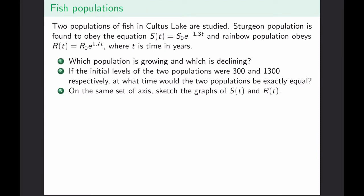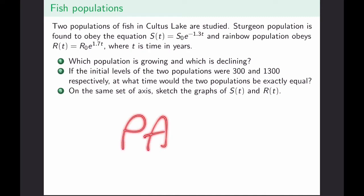Let's look at another application: fish populations. Two types of fish living in Kaltas Lake are the sturgeon population, described by one equation, and a rainbow trout population, described by another. The question asks whether the populations are growing or declining, given the initial levels, when the two populations will be exactly equal, and asks us to sketch both graphs to see how the two populations interact in terms of growth and decay. There's nothing brand new here — this is all pre-calculus skills with a calculus model.